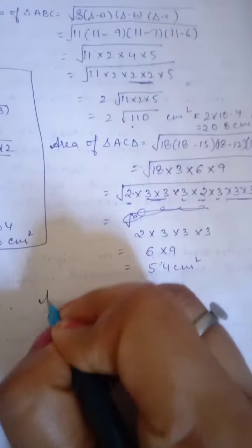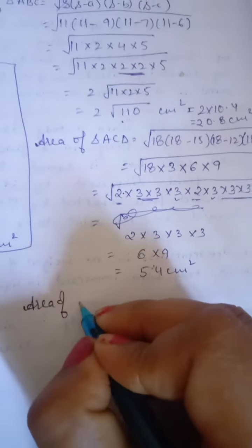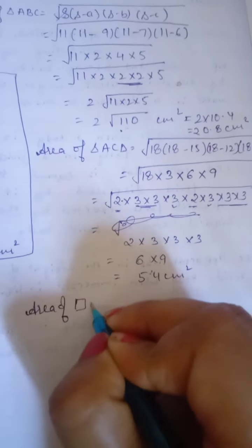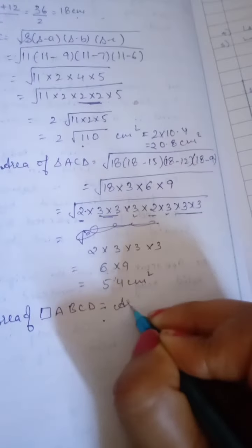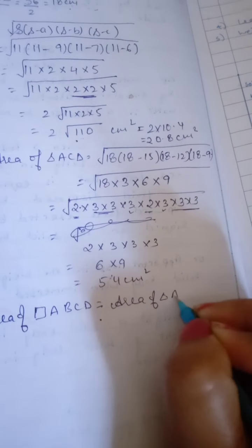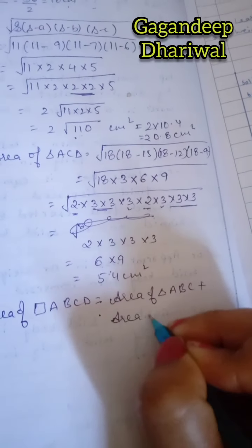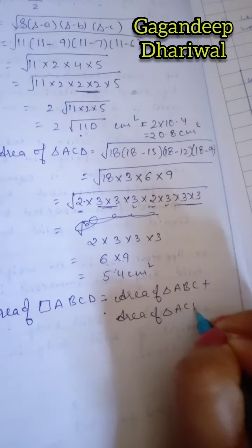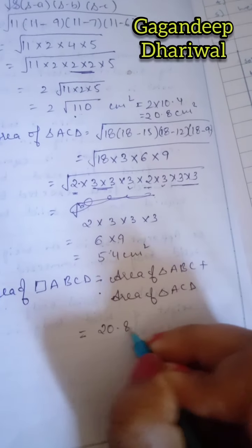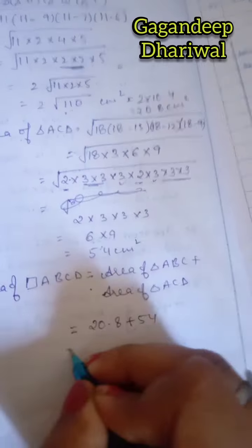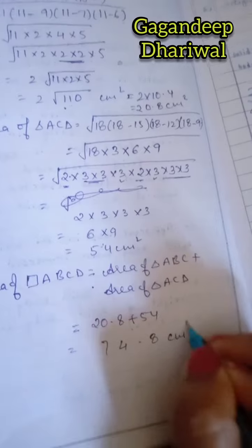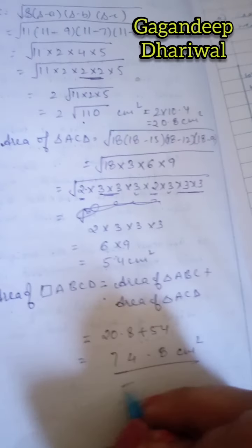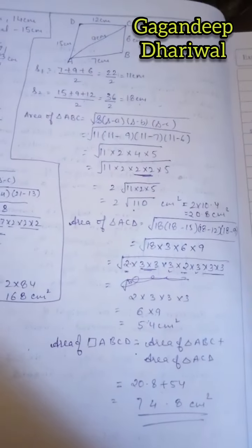Now make the sum to get the total area of quadrilateral ABCD: area of triangle ABC plus area of triangle ACD equals 20.8 + 54, which gives approximately 74.8 centimeters squared.